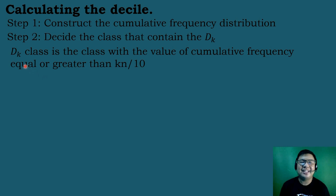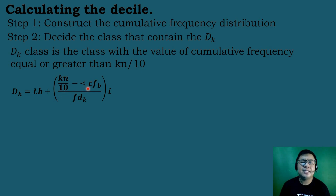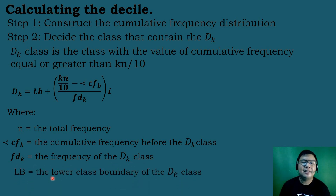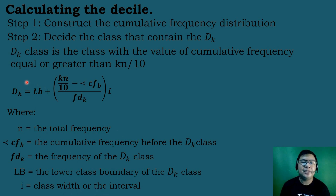After we have identified the decile k class, we will use the formula of deciles for the grouped data, in which D_k equals lb plus the quantity (k times n all over 10) minus less-than cf sub b, all over frequency, times the interval. Here, n is the total number of frequency, less-than cf sub b is the cumulative frequency before the decile sub k class, F_dk is the frequency of the decile sub k class, lb is the lower class boundary of the decile sub k class, and i is the class width or interval.